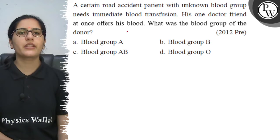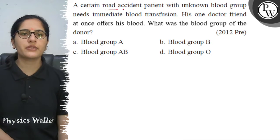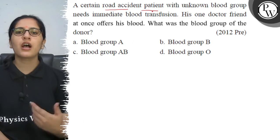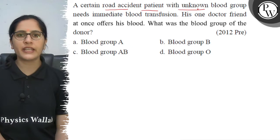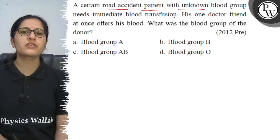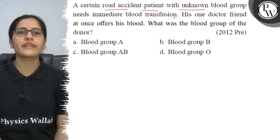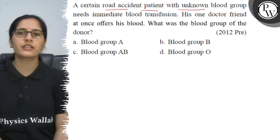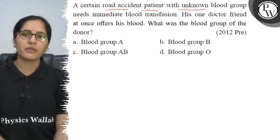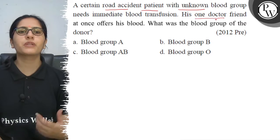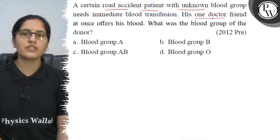In this question, if there was a road accident, we don't know the blood group of the patient, but there is an immediate blood transfusion requirement. Because in road accidents, there is a lot of blood loss. In this condition, there is a doctor friend who gives blood.